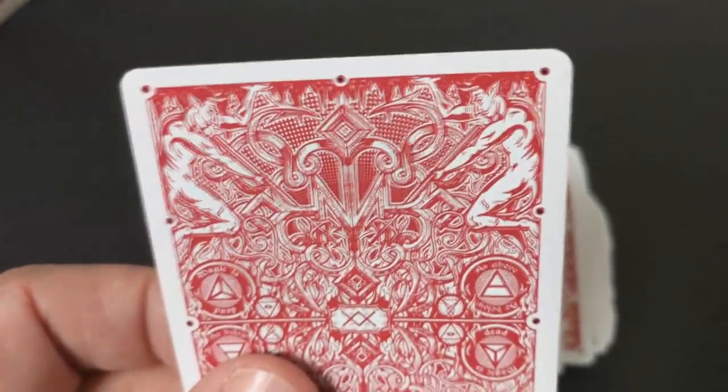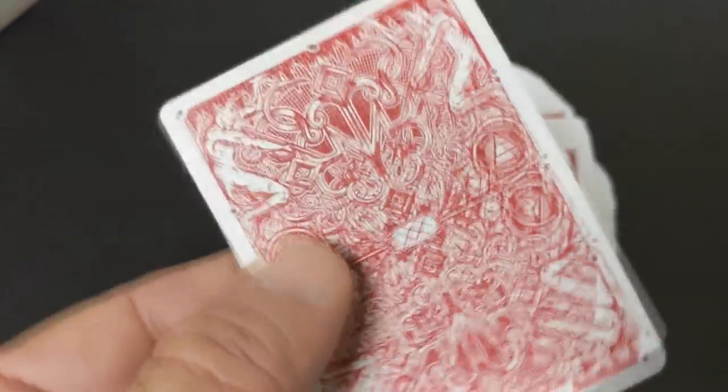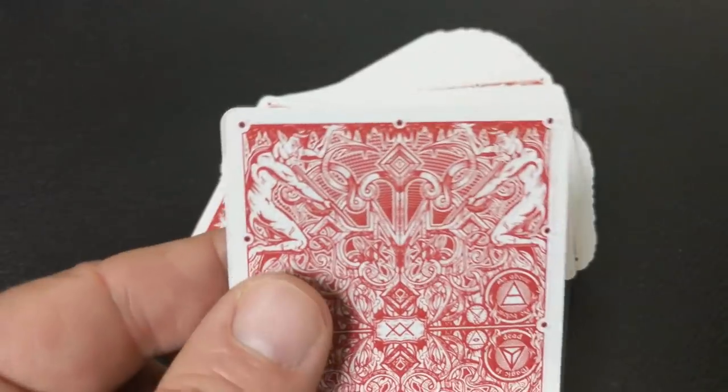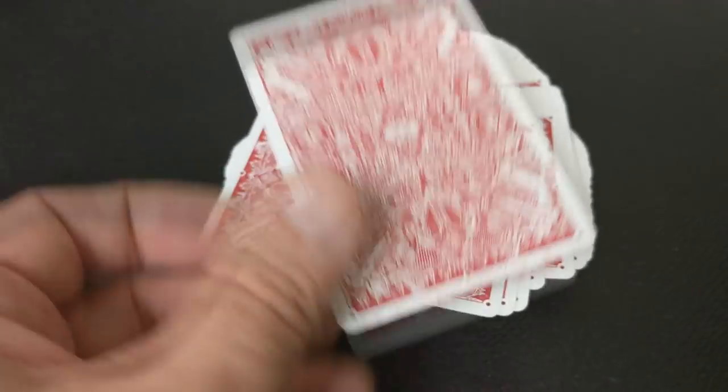But this is a recolor of the tuck case and the back design. And it's also a new printer. This is another Illusionist release through Cardamundi. I can't speak to why so many releases now with Cardamundi. I can't tell you if they're switching over to Cardamundi for good and completely leaving Bicycle. I'm sure they love the product because a lot of people love this Cardamundi B9 stock. And I assume the decks are probably less expensive to print because Bicycle is notoriously expensive.